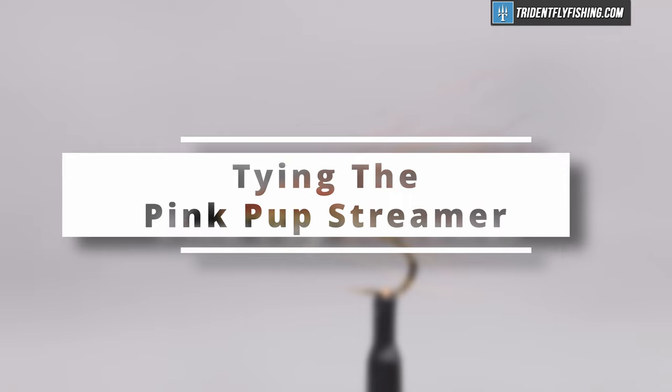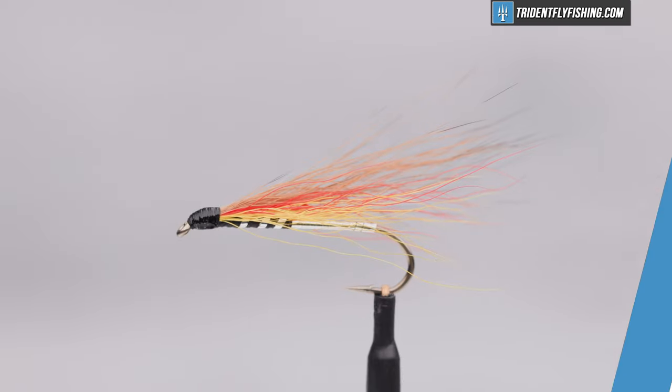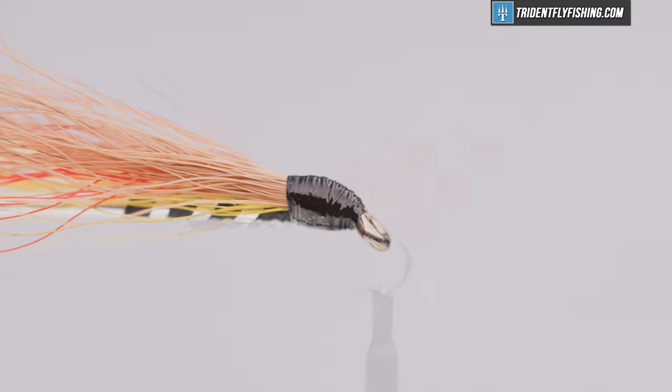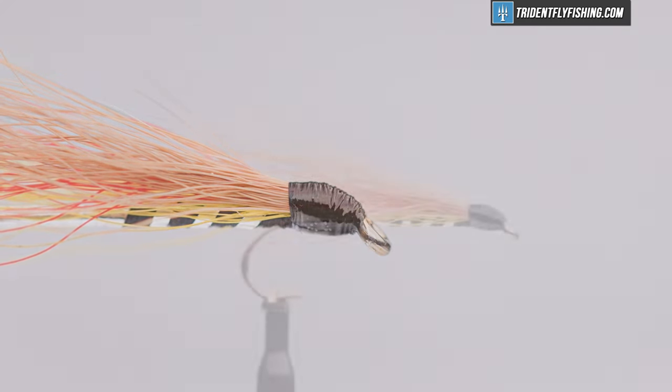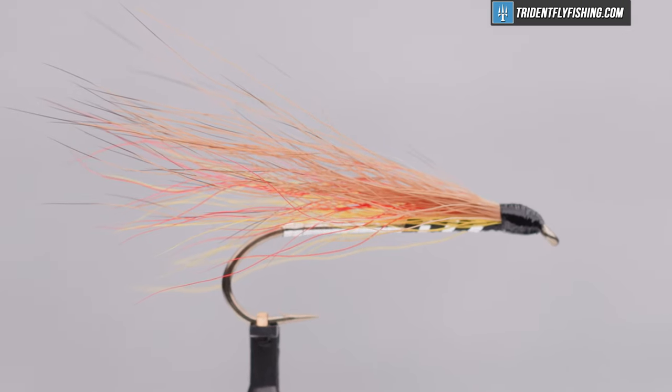Hello, I'm Carl at Trident Fly Fishing and today we're going to tie the Pink Pup. This fly was invented by Mark Burlingame in the 1940s. It's a rival to the well-known Mickey Finn streamer and it's a great fly for both trout and landlocked salmon. It's usually tied in sizes four through ten.